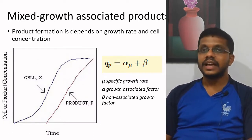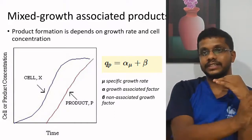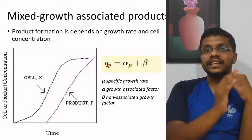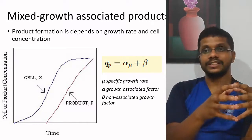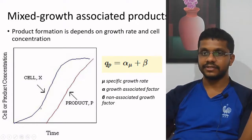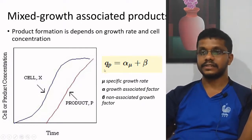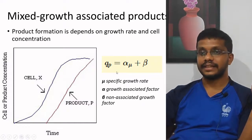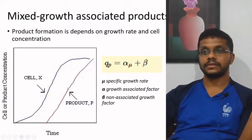Finally, we have mixed growth-associated products. In this case, product formation depends on both growth rate and cell concentration. For growth-associated products, production depends on growth rate; for non-growth associated products, production depends on cell concentration; for mixed growth-associated products, it depends on both. Mathematically, it is represented as Qp equals alpha times mu plus beta, where alpha is the growth-associated factor, beta is the constant from the non-growth associated factor, and mu is the specific growth rate. So in mixed growth-associated products, product formation depends on both growth rate and cell concentration. Thank you.